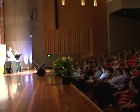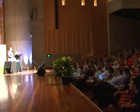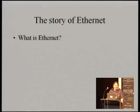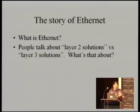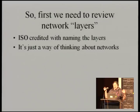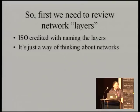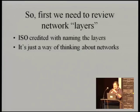Now I'll tell the story of Ethernet. What exactly is Ethernet? You probably all think it's a successful technology, but actually it died out decades ago — the thing that was actually invented. People talk about layer 2 solutions and layer 3 solutions, which is a completely nonsensical thing as we'll see. So first we need to review network layers. ISO was an international standards body credited with naming the layers of networking — it's just a way of thinking about networks. Nobody says you have to have these layers.